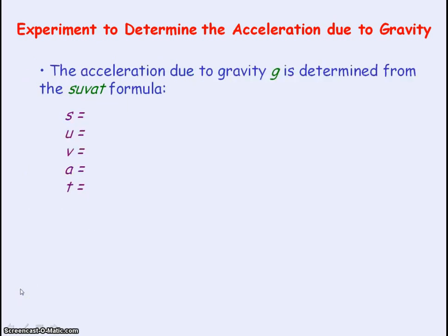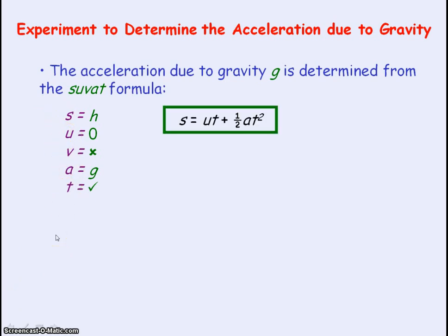We can use one of the SUVAT equations to determine the acceleration of free fall, that is g. So s, displacement, is height h. U, the initial velocity, equals zero. We do not have v, the final velocity. We are trying to determine our value for acceleration g. And we have time t from the timer. So we need an equation that links s, u, a and t — that is s = ut + ½at².